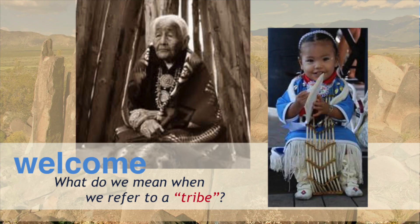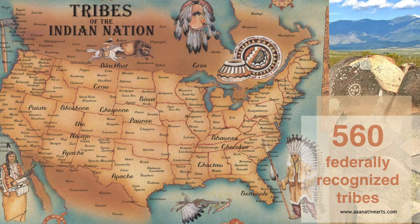Let's start by defining what we mean when we refer to a tribe. The map shown illustrates the different tribes and their original territories that existed prior to European colonialism. Today, there are over 560 federally recognized tribes in the United States and several state-recognized tribes. The federal government defines a tribe as a group with a common culture, history, and ancestry whose ancestors were in the United States prior to the arrival of the Europeans. You may also hear tribes referred to as nations, which expresses their sovereign status.